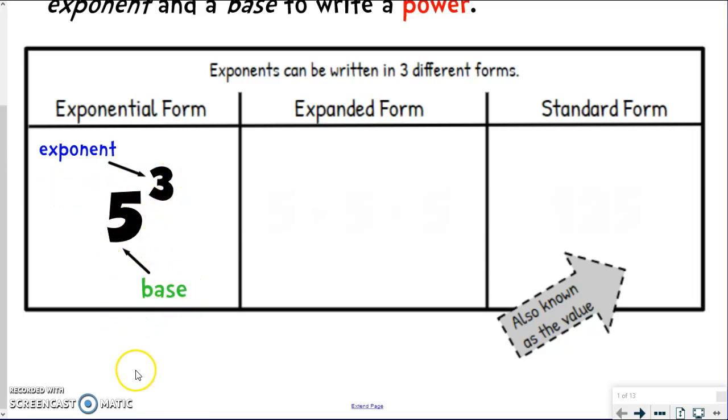So I'm multiplying 5 by itself three times, which we can easily see in the next form, which is expanded form. So if I was going to write 5 to the third in expanded form, I would show it like this. Now remember those dots just mean multiplication. You can use the dot or you can use the x sign, but I want you to start maybe using that dot because later we're going to use x for a different purpose.